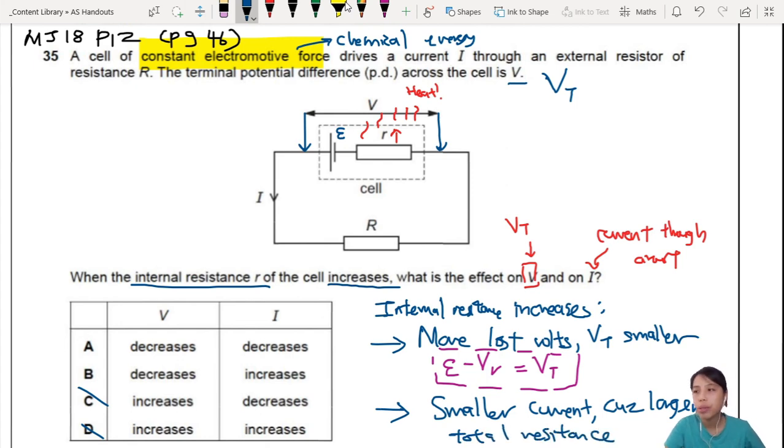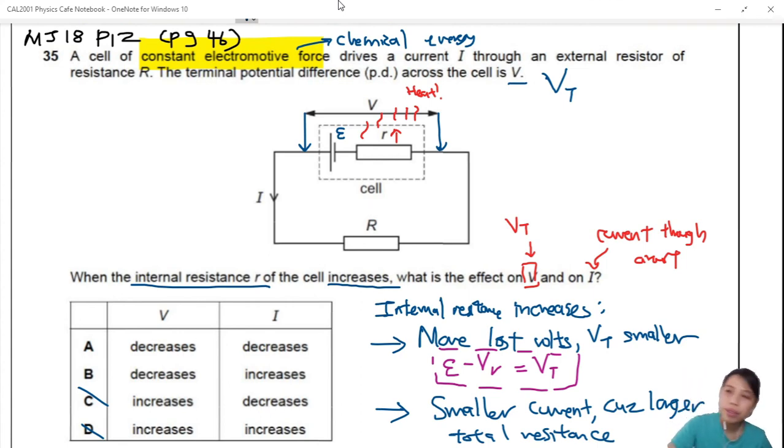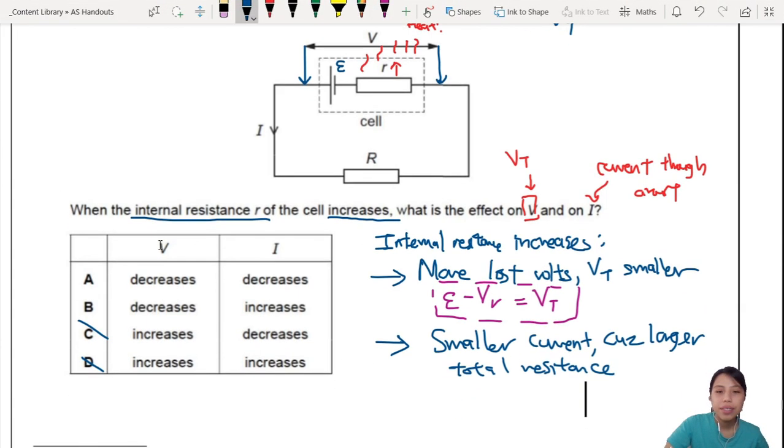So, these are the two effects you will want to note down somewhere. Sorry, I'm kind of blocking a bit. And then, from there, you look, V decreased, I also decreased. So, the answer should be A in this case. This is when the small r is changing, internal resistance is changing. So, that's the question.